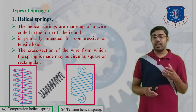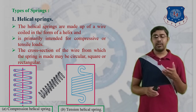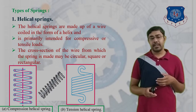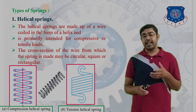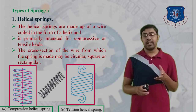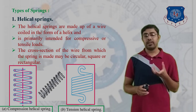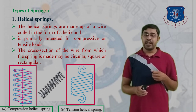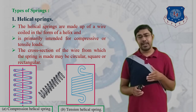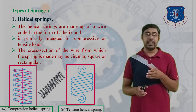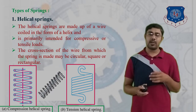For compressive loads, compression helical springs are used, and for tensile loads, tension helical springs are used. Both types are shown in the figure — the compression helical spring and the tension helical spring.